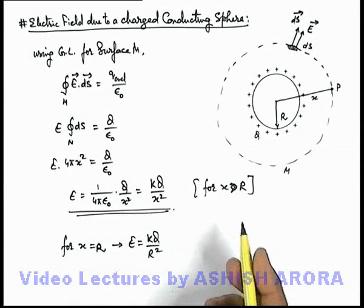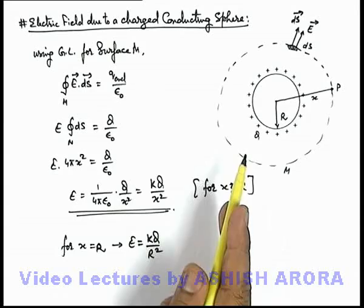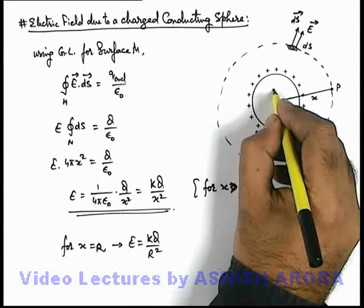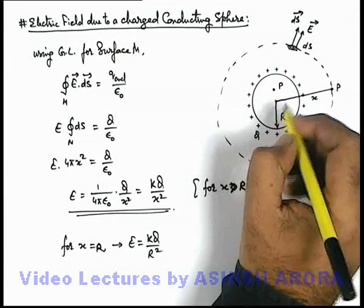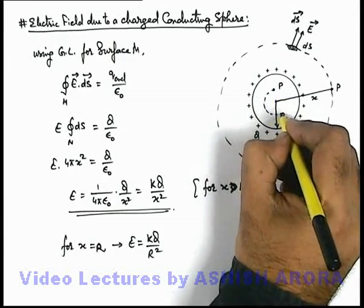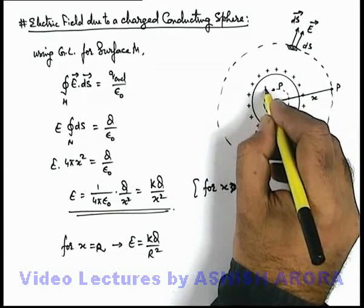Similarly we can solve it for electric field within the metal sphere. If we just find out electric field at a point P which is inside the metal sphere, and if we consider Gaussian surface passing through point P, and say this surface is L.